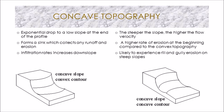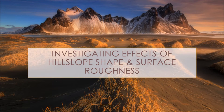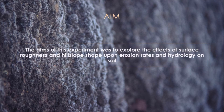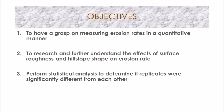In each topographic profile, the rainfall intensity, steepness, length, and roughness of the surface affect how runoff flows across the profile and how much is detached and deposited. Given all this information, we decided to experimentally investigate the effects of hillslope shape and surface roughness on soil hydrology and rates of erosion. Our objectives were to measure erosion rates quantitatively, understand the effects of surface roughness and hillslope shape on those rates, and perform a statistical t-test analysis to determine if replicates were significantly different from each other.